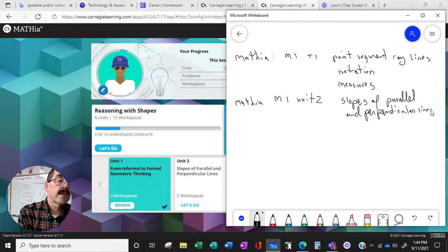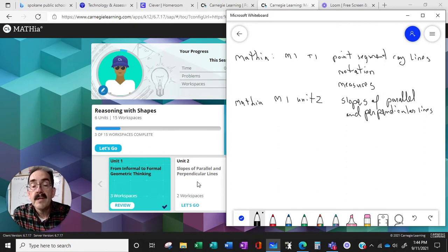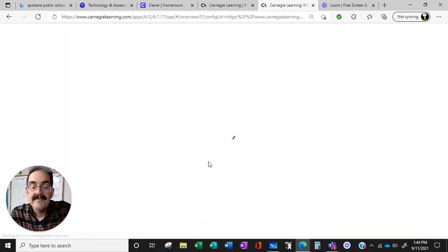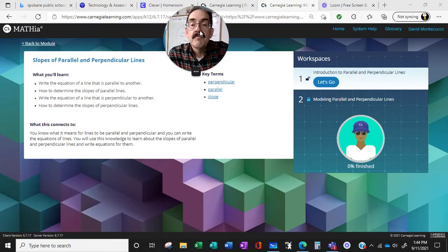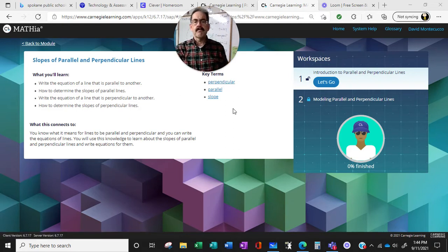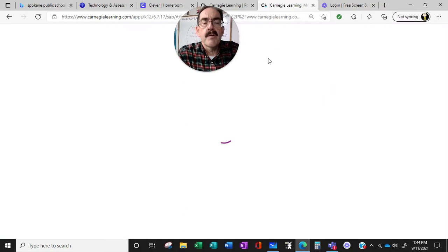Now again, we're at all different skill levels in math, so this might be new for some of you with the vocabulary. Click on Let's Go. Move my head out of the way. So we've got this idea of slope, rise over run, the perpendicular, the parallel, and the slope. Let's get an introduction.